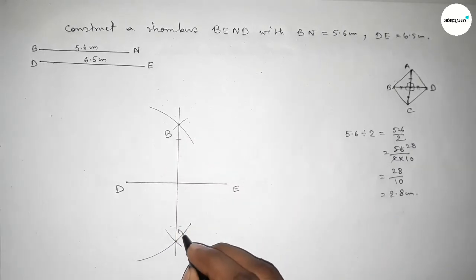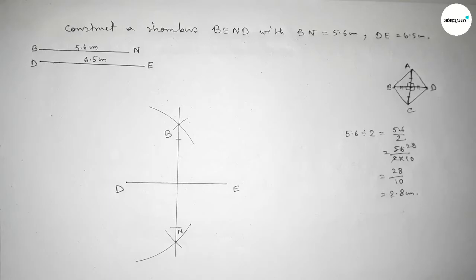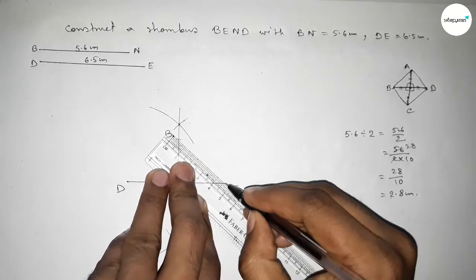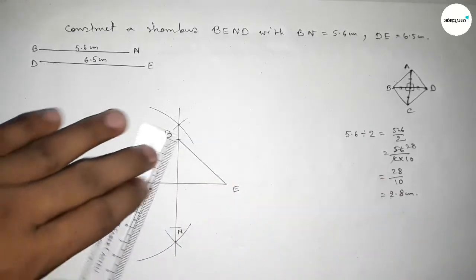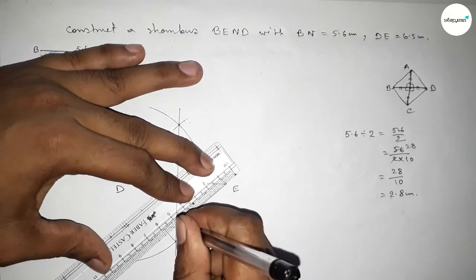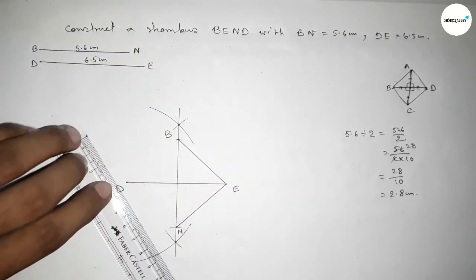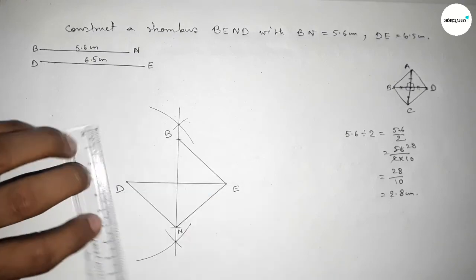Joining this side, then joining this side, then joining this side, and last joining this side to get the rhombus.